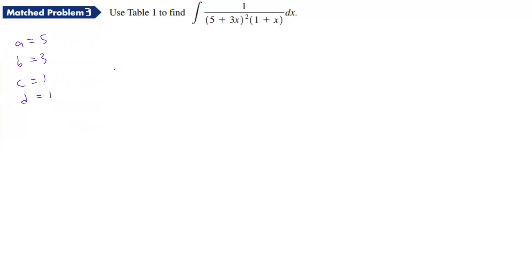So using that table, I can say, well, directly, I get 1 over 5 times 1, minus 3 times 1 times, then I have 1 over 5 plus 3X, plus.